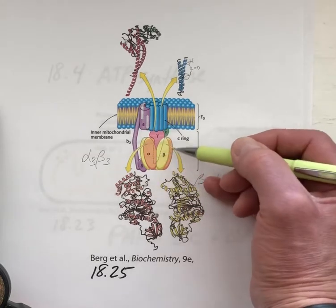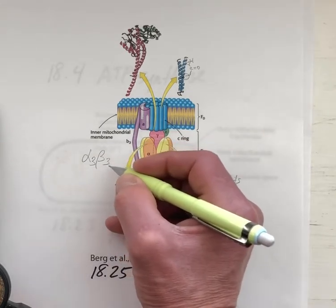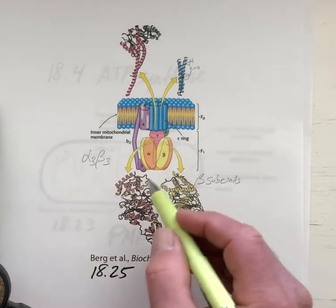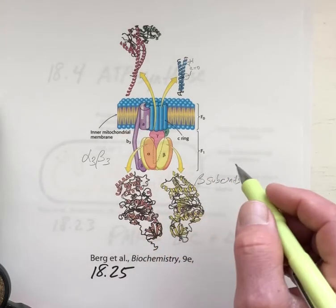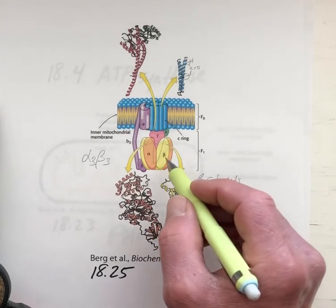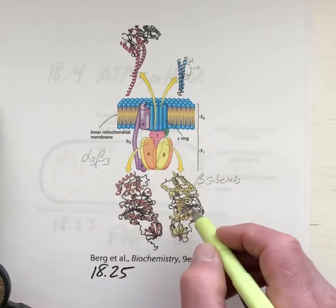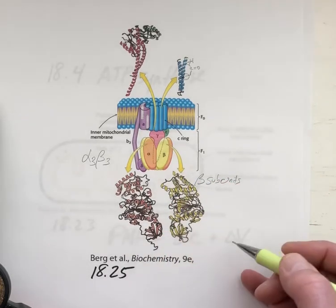The alpha subunits, together with the beta subunits, form this alpha-3, beta-3 hexamer. But the alpha subunits are just there for structural support. All the chemistry for ATP synthesis is happening at the active sites of these beta subunits.